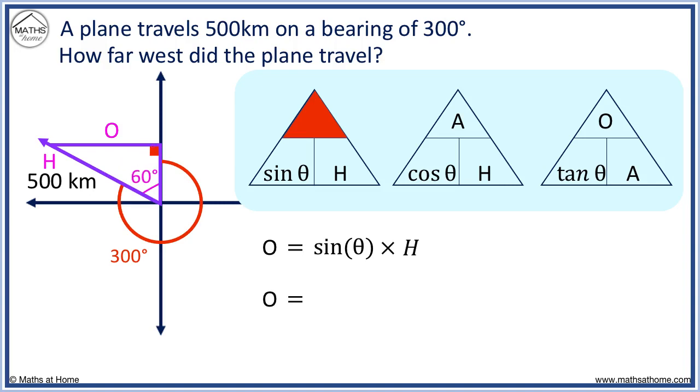θ equals 60 degrees and H equals 500 kilometers. We can now calculate this using a calculator to get the distance equal to 433 kilometers.